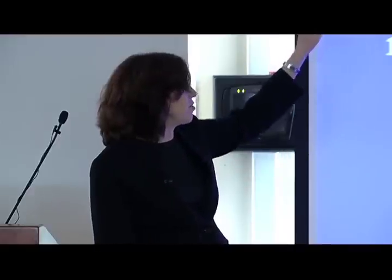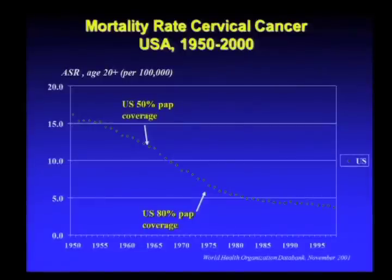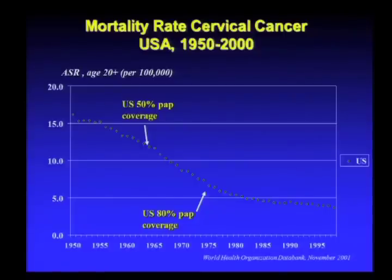Early cancers found by pap test have a much better prognosis. The pap test was developed almost by accident in the 1920s–30s, when they were trying to do something else. By the mid-1960s about 50% of women had ever had a pap test, and cervical cancer mortality rates were already going down. By the mid-1970s about 80% of women had pap smears, and rates decreased greatly, though there remains a low-level rate of cancers that slip through.